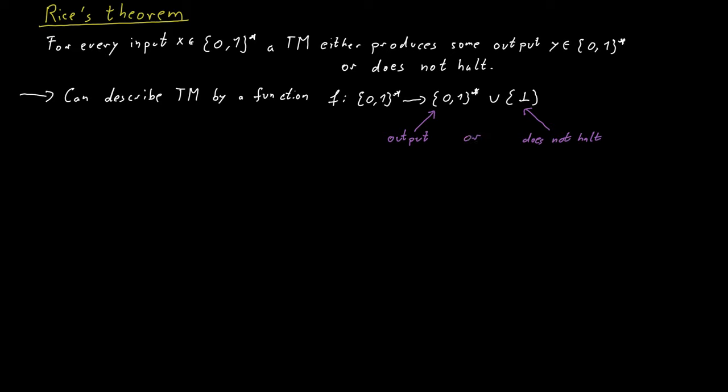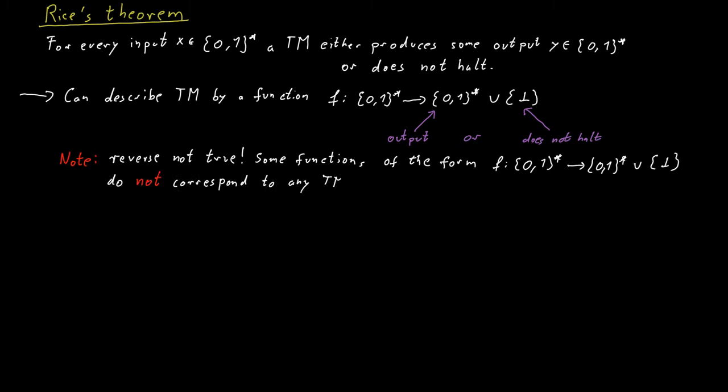We can describe each Turing machine by a function like this, indicating for each input what the output is, or possibly that the machine does not terminate on that input. The reverse is not necessarily true — there are some functions like this that do not correspond to a Turing machine. Every Turing machine corresponds to a function of this form, but not every function of this form corresponds to a Turing machine. This is based on a simple counting argument: the set of all Turing machines is countable, but the set of all these functions is not — it's an uncountable set. Therefore there must be some functions which don't correspond to a Turing machine.